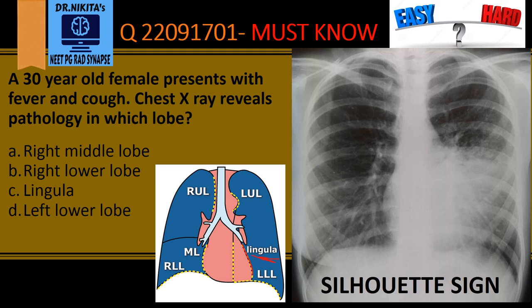Similarly, on the right side, if the right heart border is obscured, the pathology is in the right middle lobe. Here on the X-ray, the left heart border is obscured by this opacity, so the pathology is in the lingula. Therefore, the correct answer is lingula.